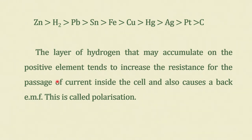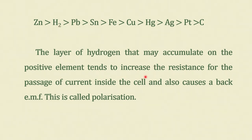This is called polarization. Polarization is the change in potential from the calculated value. It happens because the layer of hydrogen accumulates, increases the resistance to the passage of current, and the EMF increases.